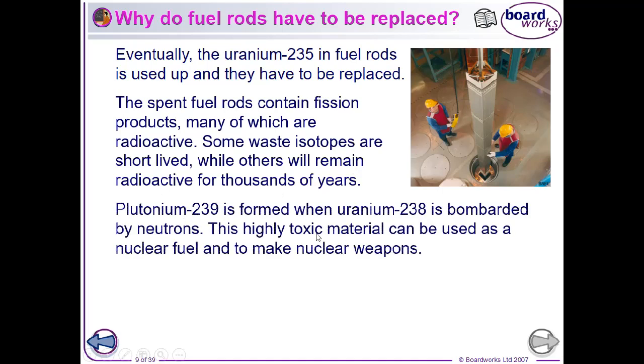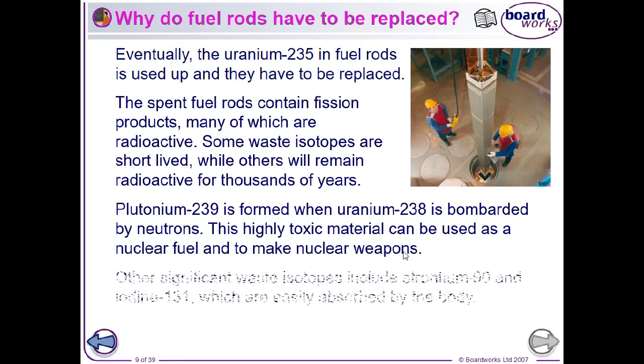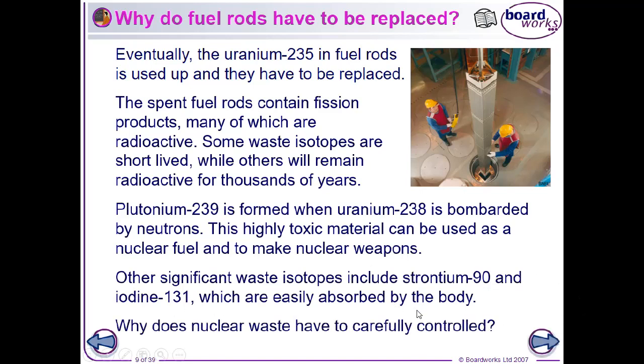For example, plutonium-239 is formed when uranium-238, that's in the fuel rod, is bombarded by neutrons. And this is extremely toxic. It's used as fuel in other types of reactors. Plus, it's also used to make nuclear weapons. Other ones like strontium-90 and iodine are easily absorbed by the body.